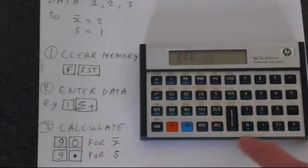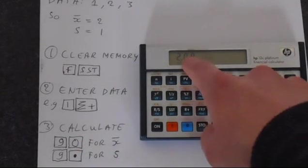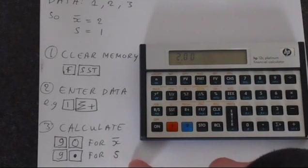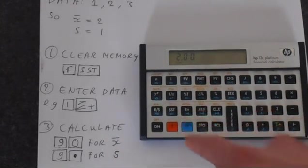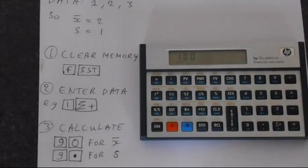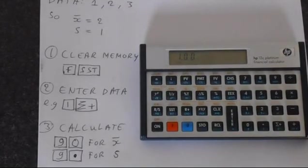So if we press G and then 0, that gives us the mean, which is 2 as we expected. Or if we press G and then the dot, we get the standard deviation. So that's how to find the sample standard deviation using your HP-12C calculator. And thank you for that.